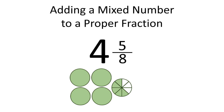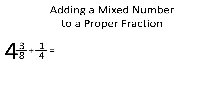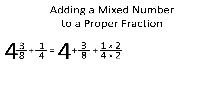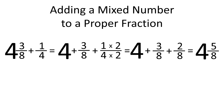Let's repeat what we did. First, we rewrote 4 and 3 eighths as 4 plus 3 eighths. Then we found the common denominator for 3 eighths and 1 fourth, which is 8. That way, we have 4 plus 3 eighths plus 2 eighths, which is equal to 4 and 5 eighths. So 4 and 3 eighths plus 1 fourth equals 4 and 5 eighths.